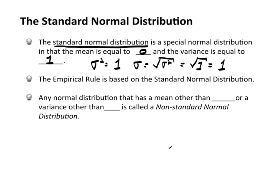So a standard normal distribution has a mean of 0 and a variance of 1. Now the empirical rule is actually based on the standard normal distribution.